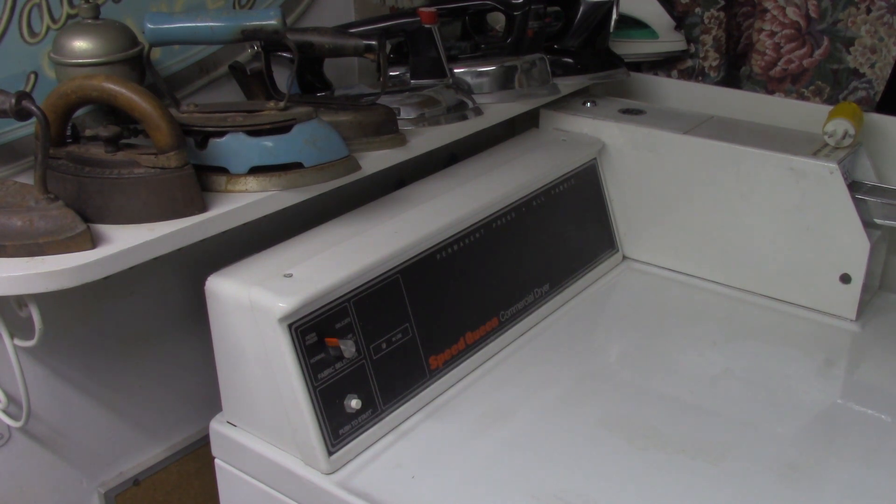This video might be useful for many different models of Speed Queen commercial dryers. This is a simple Speed Queen coin operated dryer, mostly found in residential apartment buildings and multi-unit buildings.